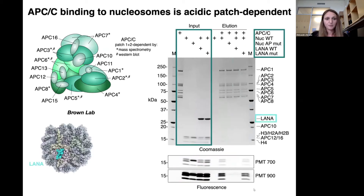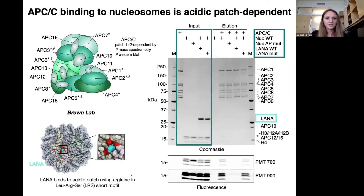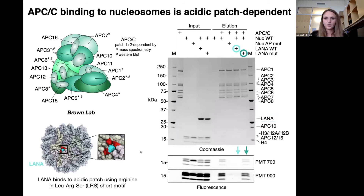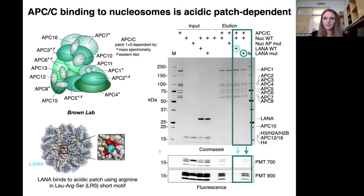To further confirm this acidic patch dependence, we used the LANA peptide, which is a known acidic patch binder, to compete nucleosomes from the APC. It is known that LANA recognizes the acidic patch through the arginine anchor, and we used LANA and a LANA mutant as competitors in the pull-down experiment. Not surprisingly, LANA wild-type but not LANA mutant was able to remove nucleosomes from the APC, once again showing acidic patch dependence.